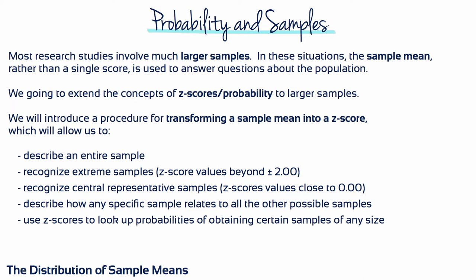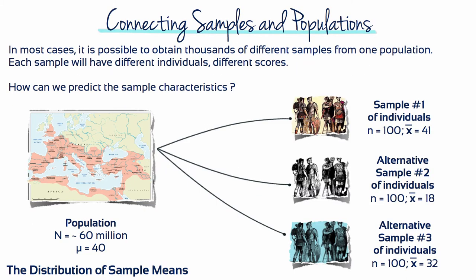In addition, we can use the z-score values to look up probabilities for obtaining certain samples, no matter how many scores the sample contains. It's usually possible to obtain thousands or even millions of different samples from the same population. Under these circumstances, how can we determine the probability for obtaining any specific sample?